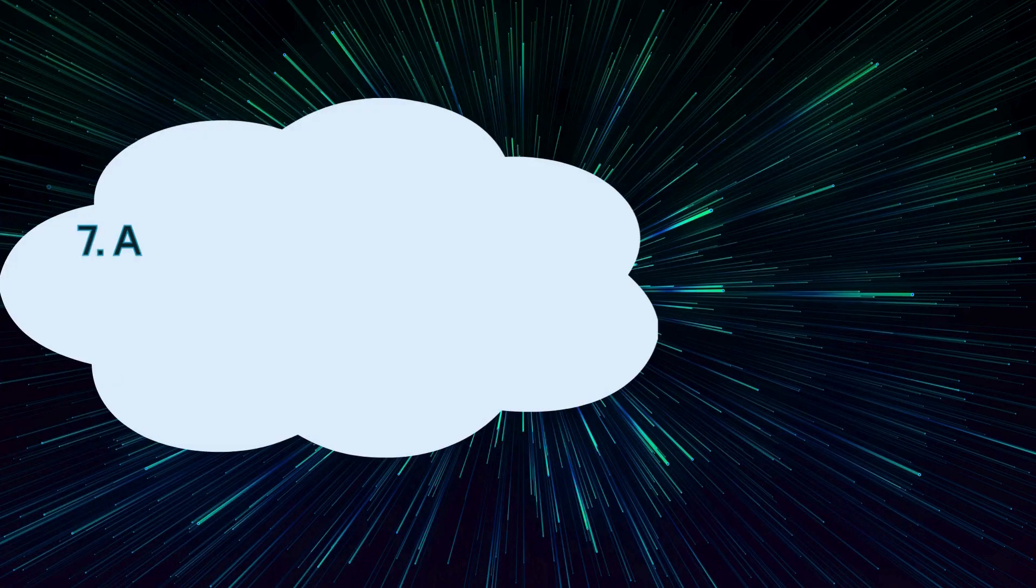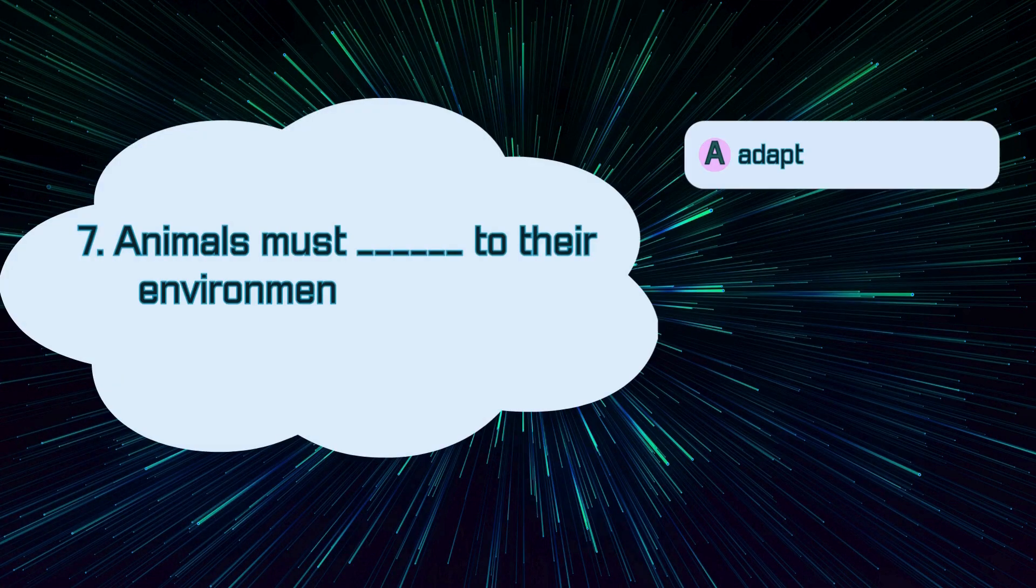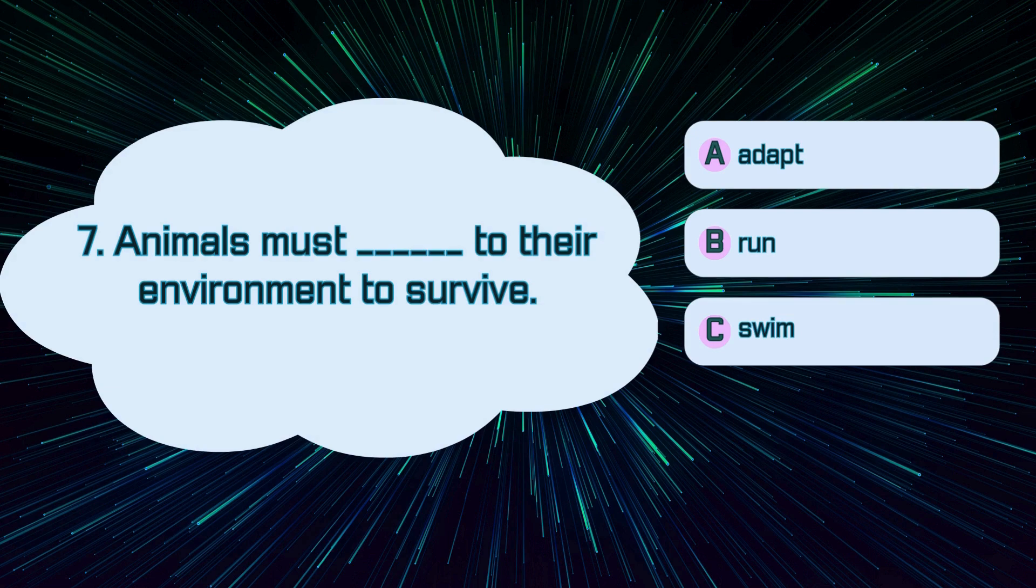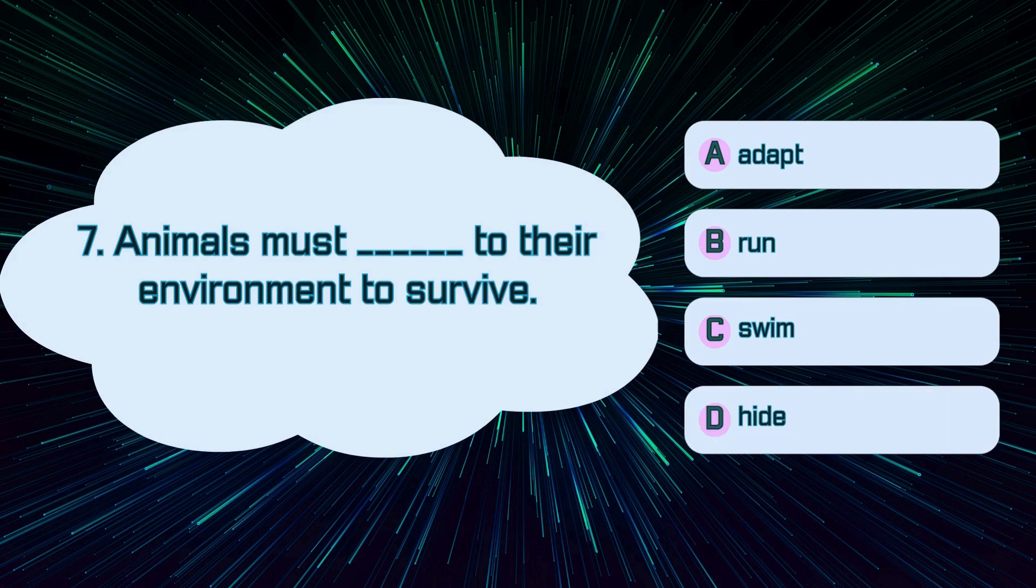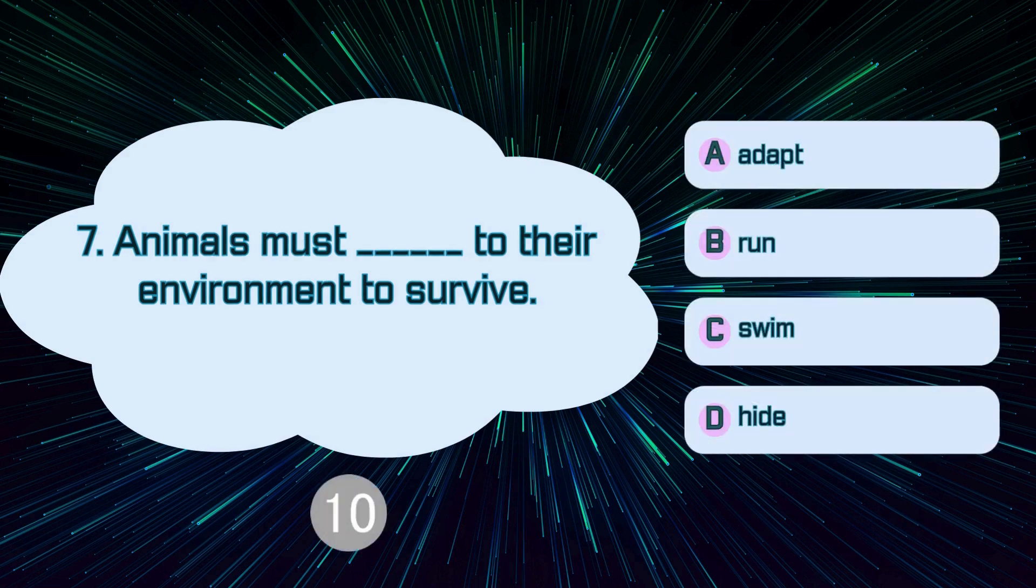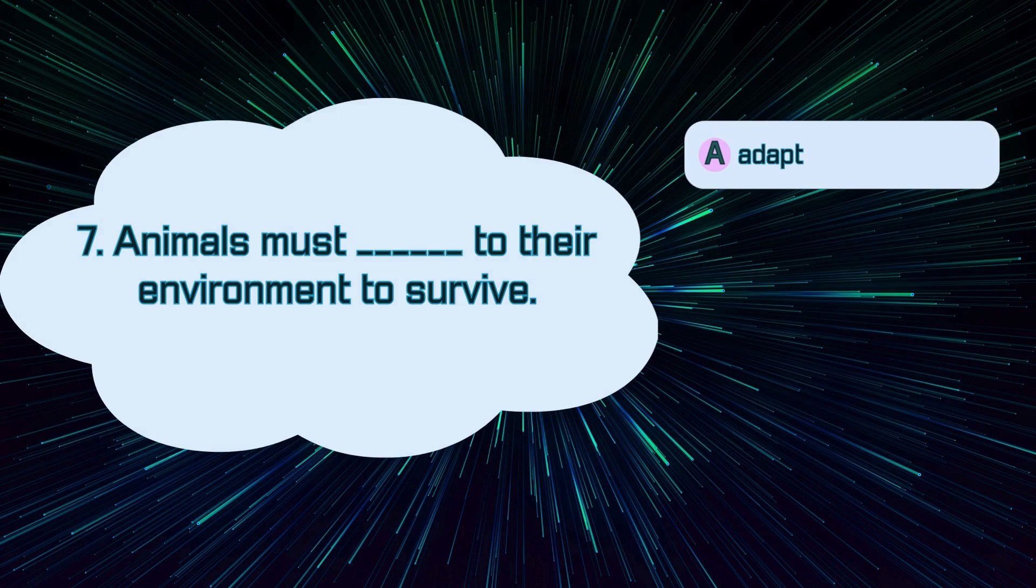Number 7. Animals must blank to their environment to survive. A. Adapt, B. Run, C. Swim, D. Hive. The correct answer is A. Adapt.